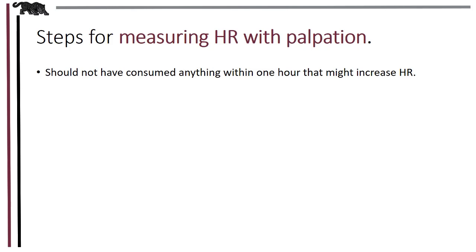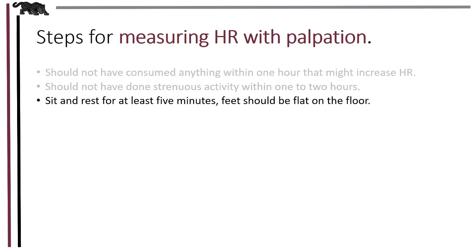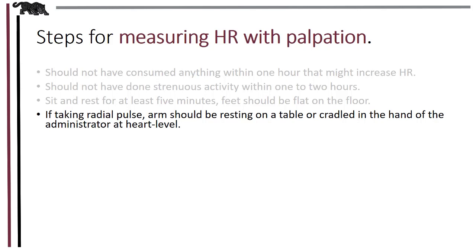For the steps of measuring heart rate with palpation: first, make sure clients are instructed not to eat or drink anything that might increase heart rate, especially caffeinated or stimulatory substances — at least within the hour before measurement. Patients should not have engaged in any recent exercise or strenuous activity; scholars suggest waiting one to two hours after exercise. Have clients sit down and rest for at least five minutes. Feet should be flat on the floor in an upright, comfortable position, and if taking the radial pulse, the arm should be resting on a table or cradled at heart level.